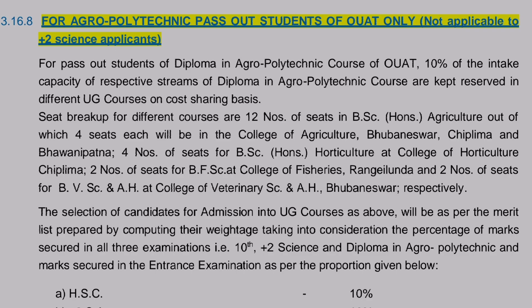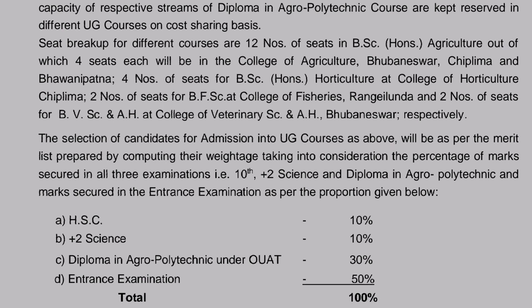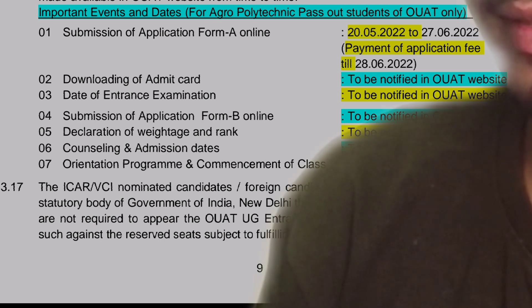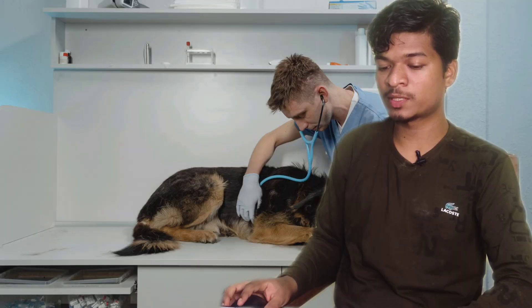For agro polytechnic pass-out students, two seats are available for BVSc & AH at the College of Veterinary Science and Animal Husbandry, OUAT. Their selection procedure is different: 10% weightage is taken from Plus 2 Science, 10% from HSC, 30% from the Diploma in Agro Polytechnic under OUAT, and 50% from the entrance examination, totaling 100%. Let's talk about the important events that agro polytechnic students must go through to take admission.